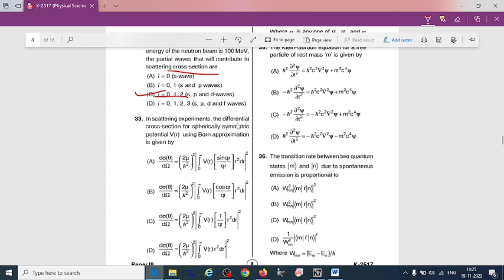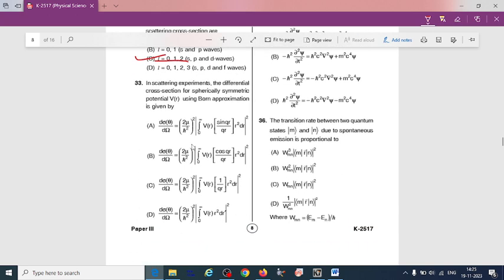In scattering experiment, the differential cross section for spherical symmetric potential V(r) using Born approximation is given by... So this is the derivation of Born approximation. Option A is correct: dσ/dΩ = (2μ/ℏ²)² |∫₀^∞ V(r)sin(qr)/(qr) r²dr|². This is in case of spherical symmetric potential.